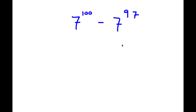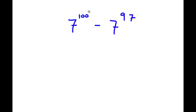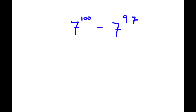In this problem, I have 7 to the power of 100 minus 7 to the power of 97. To solve this, I'm going to first rewrite 100 here as 97 plus 3.